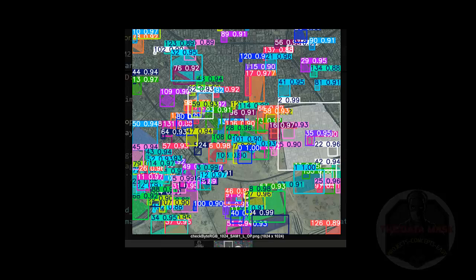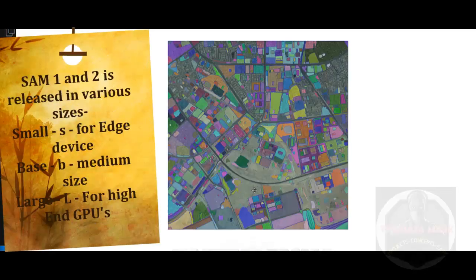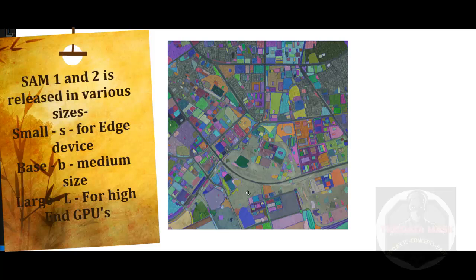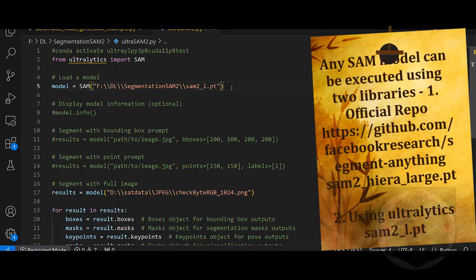This is the total segmented boundaries which is found by SAM 1. Here you can see that all the boundaries or all the segments are marked in different colors. This is the output of SAM 1.